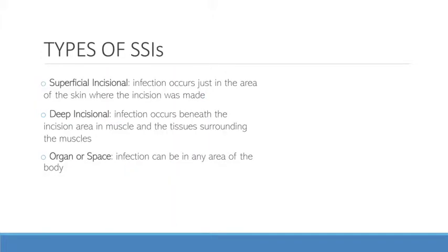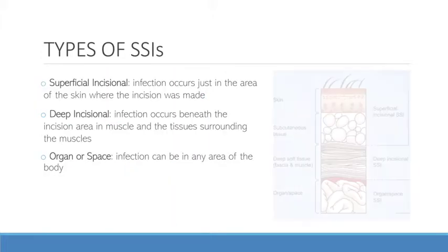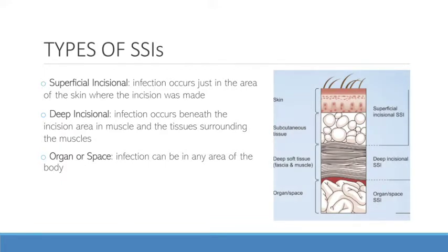Surgical site infections can be classified into three types. There are superficial incisional infections, which involve the area of the skin just below the incision; deep incisional infections, which involve deep soft tissues such as fascial and muscle layers; and finally, organ and space infections, which can involve any part of the body that has been manipulated during the operation.